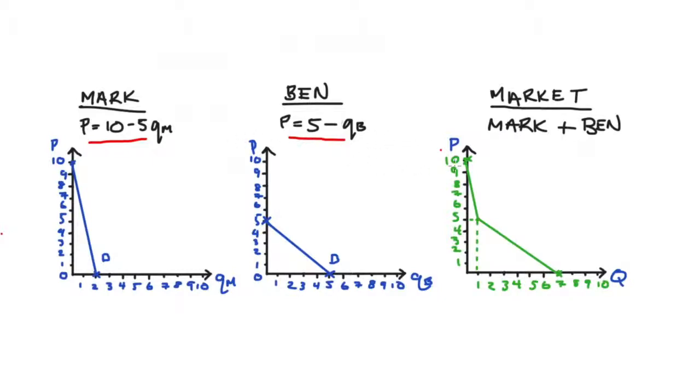If you remember from the last video, we constructed the market demand curve by horizontally summating the individual demand curves at each price, and we ended up with this kink here because our two individuals in the market, Mark and Ben, had different price axis intercepts. When writing out the algebraic representation of the curves, I need to make sure that I describe this market demand with this kink here adequately.